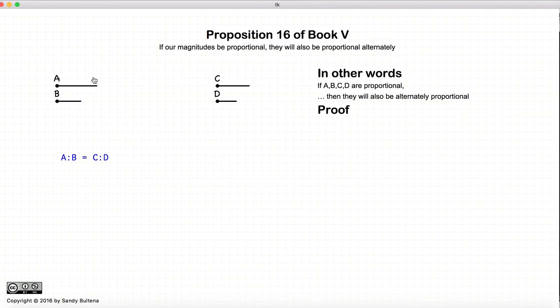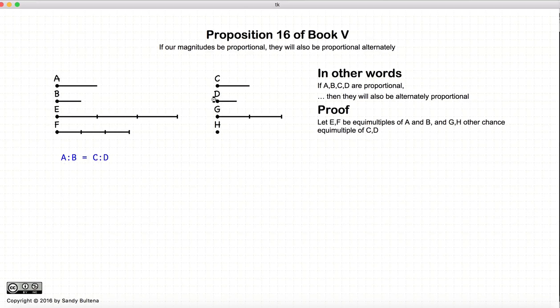So let's prove this. This is our starting condition: A to B is equal to C to D. Now we're going to create two new lines, E and F, that are equal multiples of A and B respectively. Two new lines, G and H, that are different equal multiples of C and D respectively.